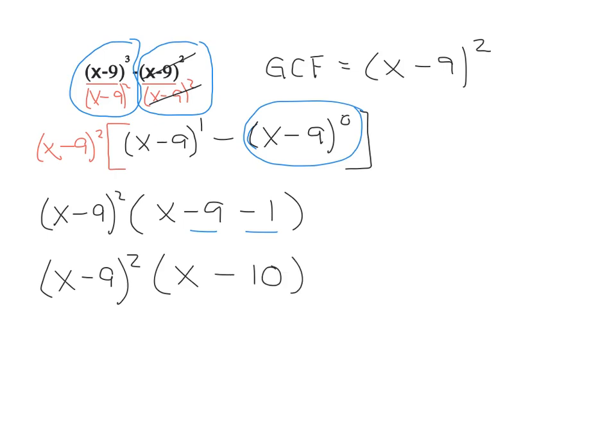The final result, factored form, is x minus 9 squared times x minus 10. If we needed, if this was within an equation and we needed to solve this, we could set each factor equal to 0 and solve. But our job here is just to factor, so we're done.